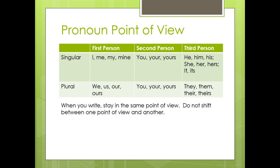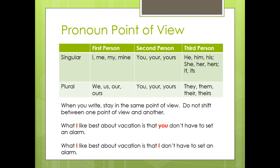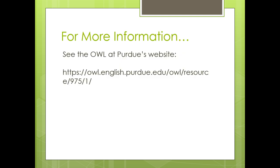When you write, make sure that you stay in the same point of view. Don't shift between one point of view and another. For example, this sentence is a little confusing: what I like best about vacation is that you don't have to set an alarm. That doesn't really make sense, does it? This would be better: what I like best about vacation is that I don't have to set an alarm. So make sure that when you use a pronoun, you stay in the same point of view. For more information, check out the OWL at Purdue's website at this address.